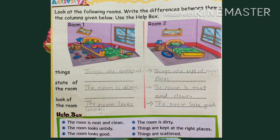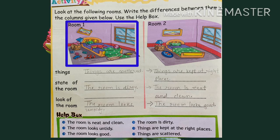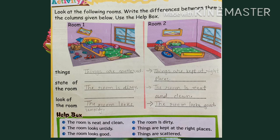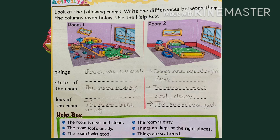Let us understand the activity that is given on page number 164. Look at the following rooms and write the differences between them in the columns given below. Use the help box. See room number 1 and also see room number 2. In room number 1, all the things are not in their place. And in room number 2, you can see that all things are arranged very properly.